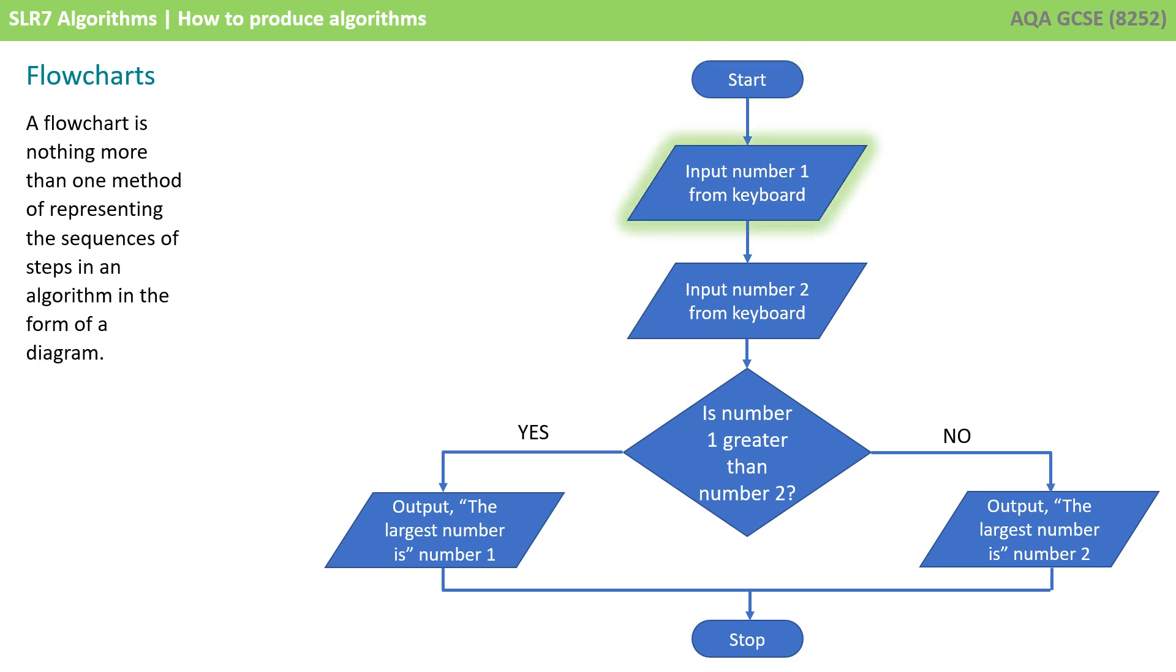We input a number from the keyboard. We input a second number from the keyboard. We ask, is number 1 greater than number 2? And if it is, then we follow one branch. And if it's not, we follow another. Then there's different outputs depending on the outcome of that decision, before the program comes to a stop.